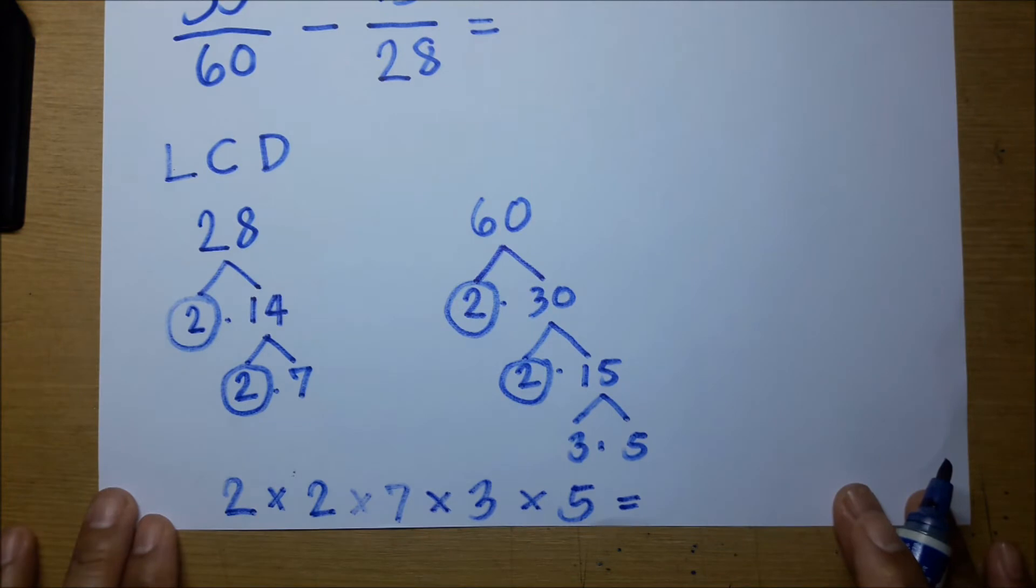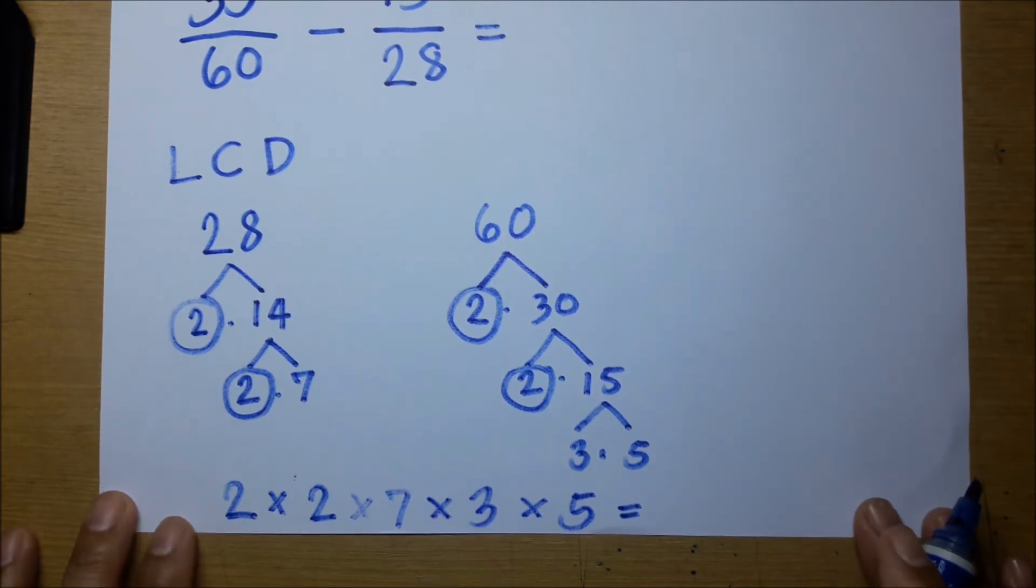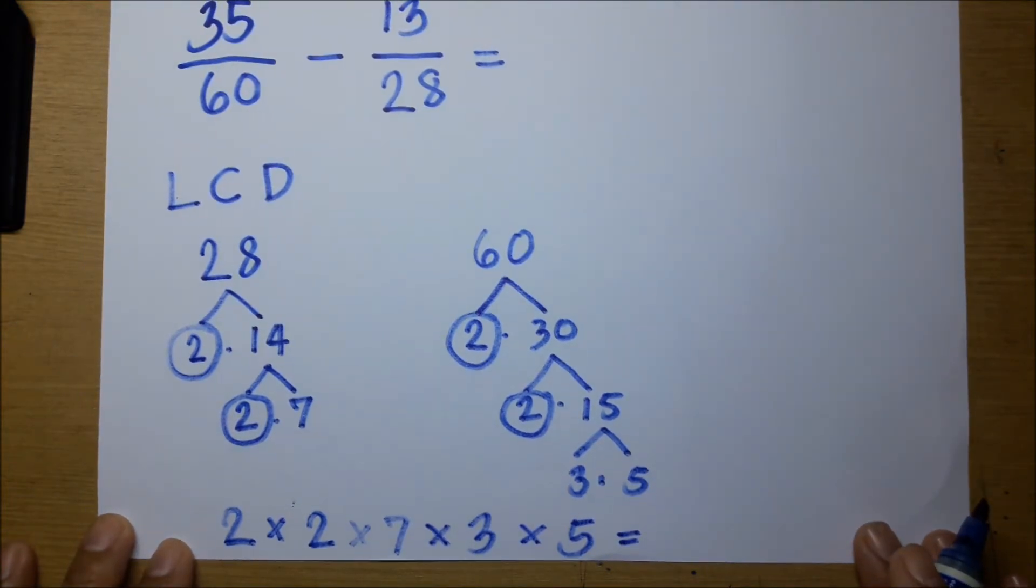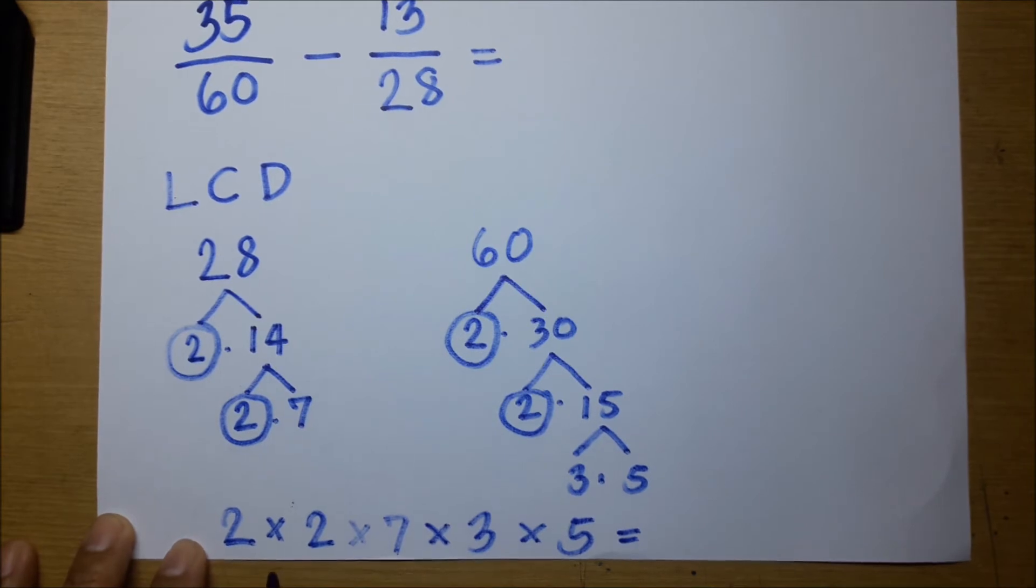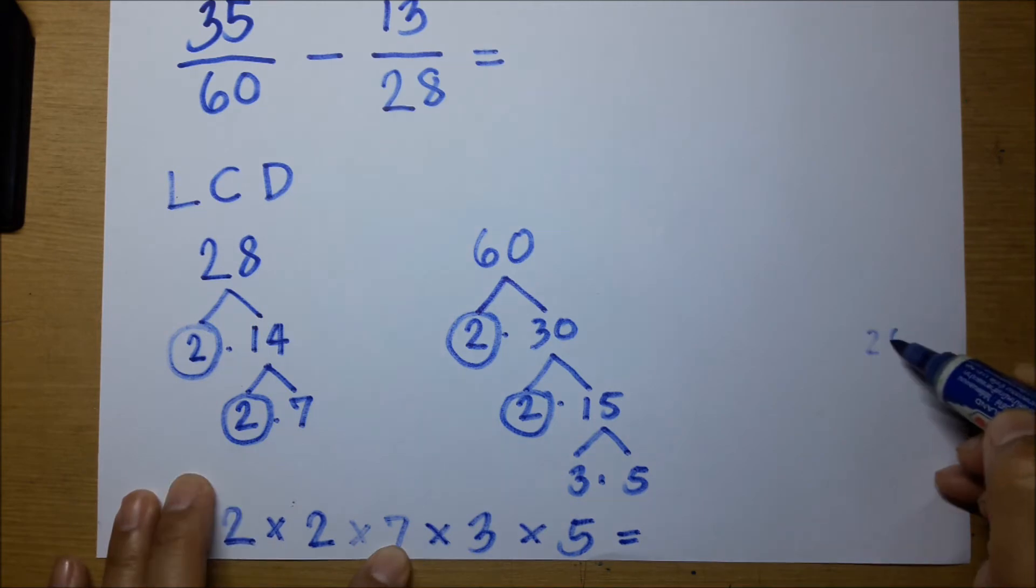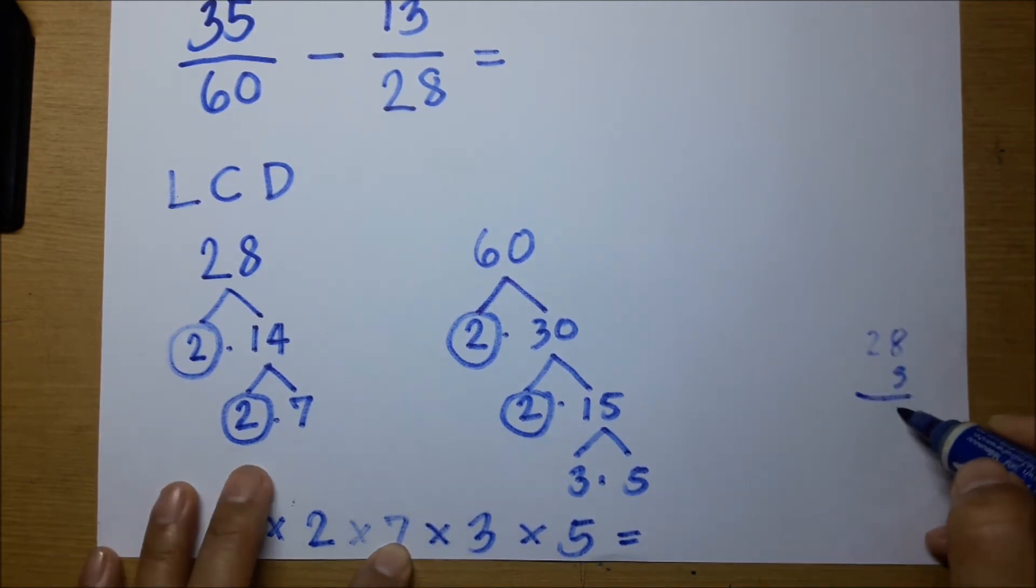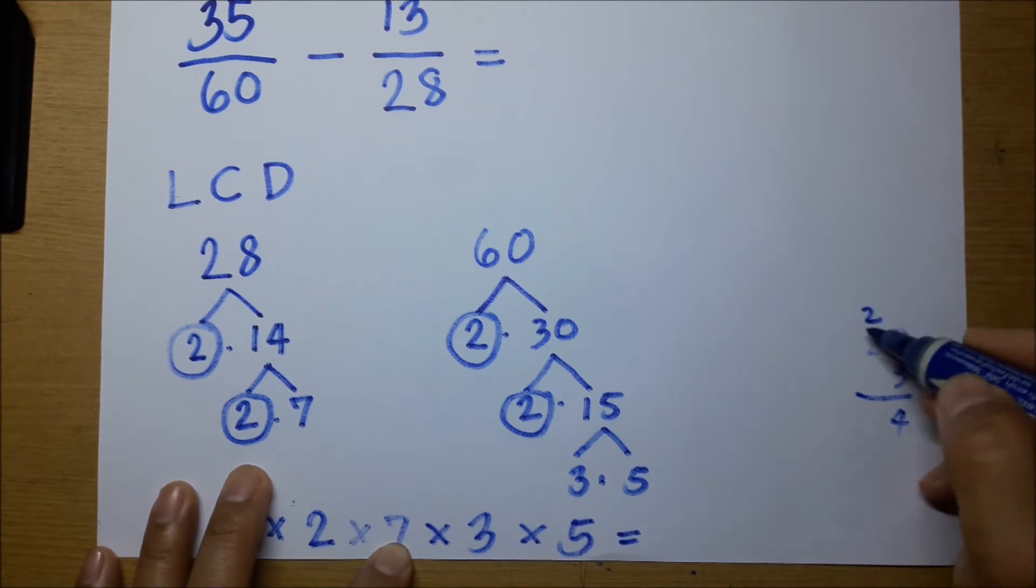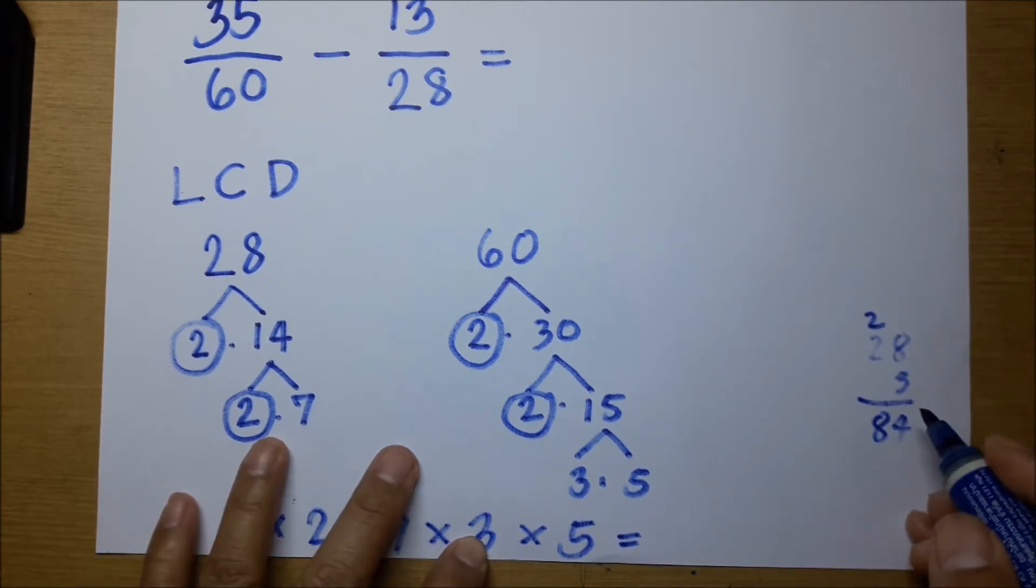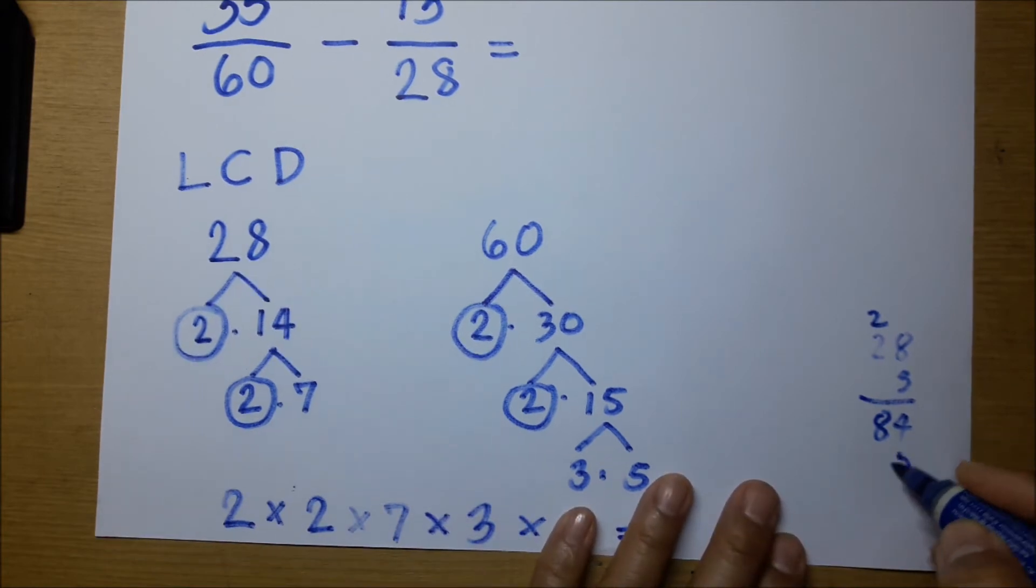So ito na ngayon yung ating prime factor. 2 times 2 is 4, times 7 is 28, 28 times 3 gives us 84.